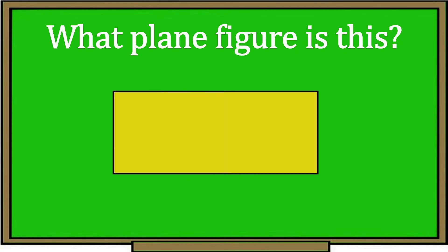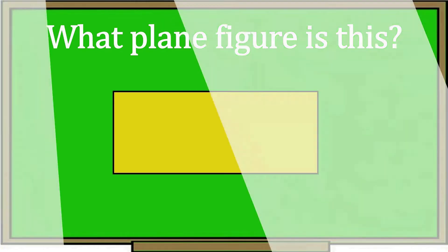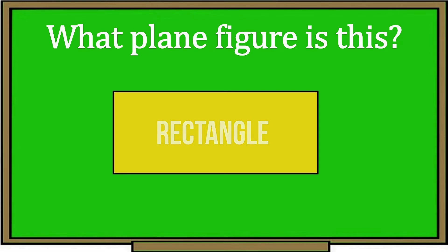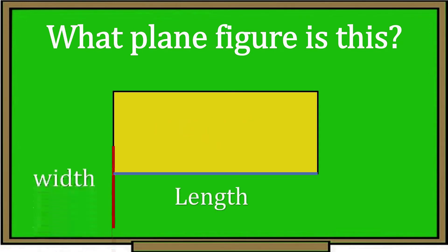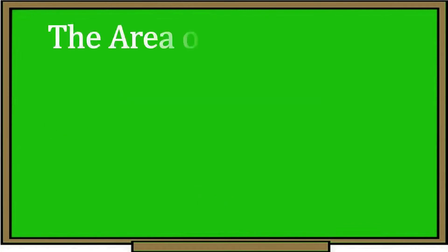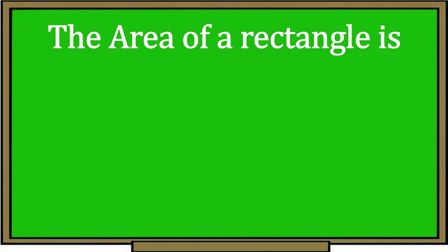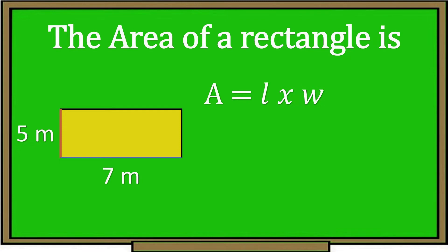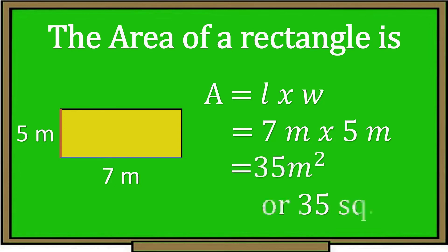Do you know what plane figure this is? This is a rectangle. The two dimensions of a rectangle are the length and the width. Suppose the length of this rectangle is 7 meters and the width is 5 meters. The formula for finding the area of a rectangle is: area equals length times width. So 7 meters times 5 meters equals 35 square meters. The area of the rectangle is 35 square meters.